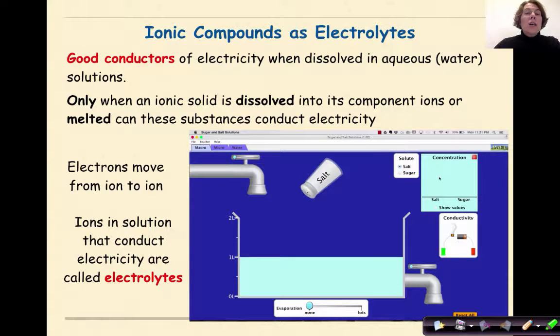Ionic compounds are good conductors of electricity when dissolved in aqueous or water solutions. Only when an ionic solid is dissolved into its component ions or melted can these substances conduct electricity. In this situation, electrons will be able to move from ion to ion. Ions in solution that conduct electricity are called electrolytes, any charged particles in an aqueous solution.